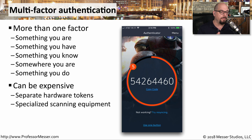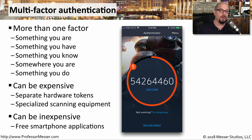For example, you might need to have separate hardware tokens that people are using during the login process. Or maybe you're installing biometric equipment so someone can scan a fingerprint to gain access to a room. Some of these multi-factor authentications are inexpensive — they could be an app that runs on a smartphone, making it very easy to install and use additional authentication factors.